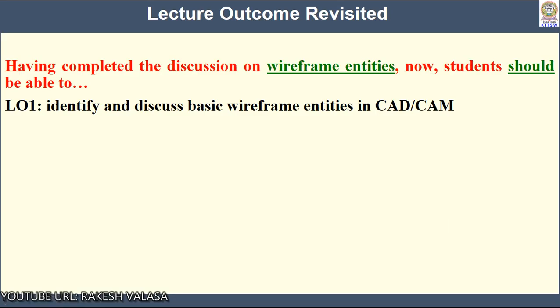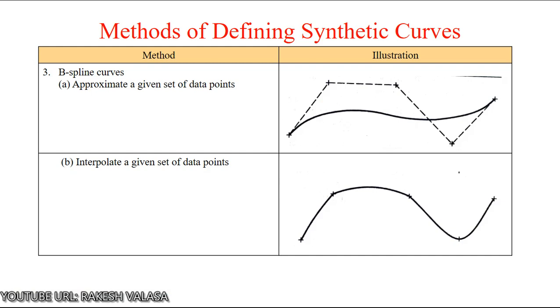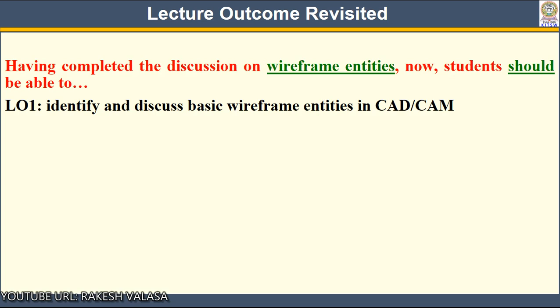This is a brief discussion about wireframe entities in CAD/CAM systems. Having completed the discussion on wireframe entities, students should now be able to identify and discuss basic wireframe entities in CAD/CAM. Wireframe entities include points, lines, circles, arcs, parabolas, ellipses, and synthetic curves in CAD/CAM systems.